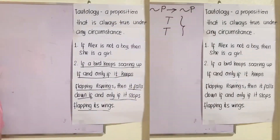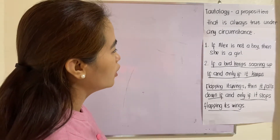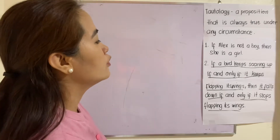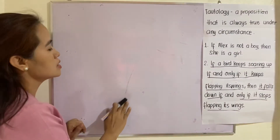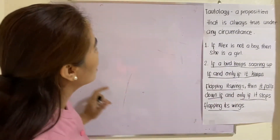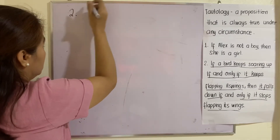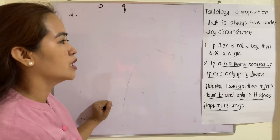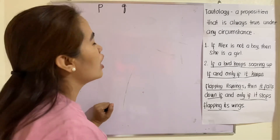Example two: if a bird keeps soaring up if and only if it keeps flapping its wings, then it falls down if and only if it stops flapping its wings. In this case there are two propositions; the other two are just their negations. So let's represent them first. P: the bird keeps soaring up, and Q: it keeps flapping its wings.